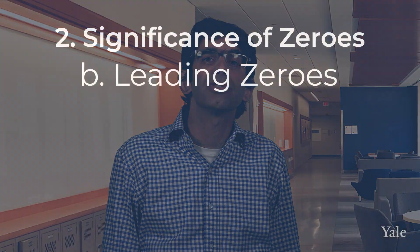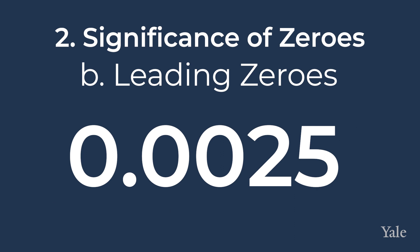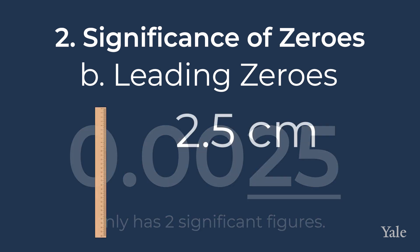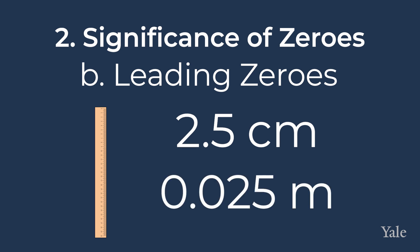Leading zeros are zeros that come at the beginning of a number, and they are never significant figures. So 0.0025 only has two significant figures. Don't let leading zeros lead you on. That's because when you measure that something is 2.5 centimetres, you are certain about the 2 and the 5. But if I instead wrote it as 0.025 metres, those zeros are not significant and do not imply any increased certainty.